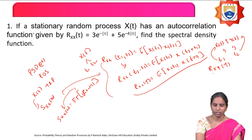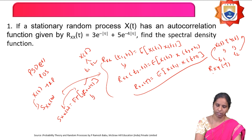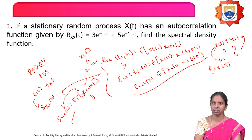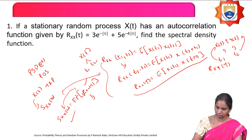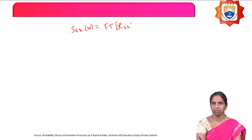The question given is: a stationary random process x(t) has an autocorrelation function Rx(τ) = 3·e^(−|τ|) + 5·e^(−4|τ|). Find the spectral density function of that random process x(t). They have given the autocorrelation function, and we have to calculate the power density spectrum. Both form a Fourier transform pair, so Sx(ω) = Fourier transform of Rx(τ).